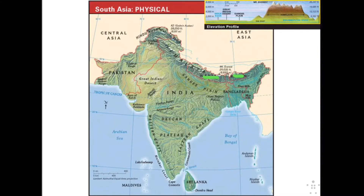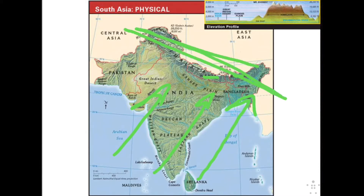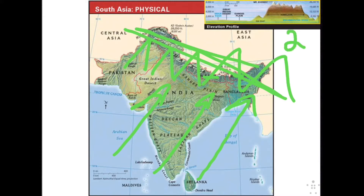According to Continental Drift, about 60 million years ago the Indian subcontinent was part of Africa. It broke away from Africa and collided with the Asian continent. These tectonic forces — the Indian plate smashing into the Asian plate — formed the Himalaya mountain ranges. Mount Everest is the world's tallest peak at 29,035 feet above sea level, and it actually grows two centimeters per year.